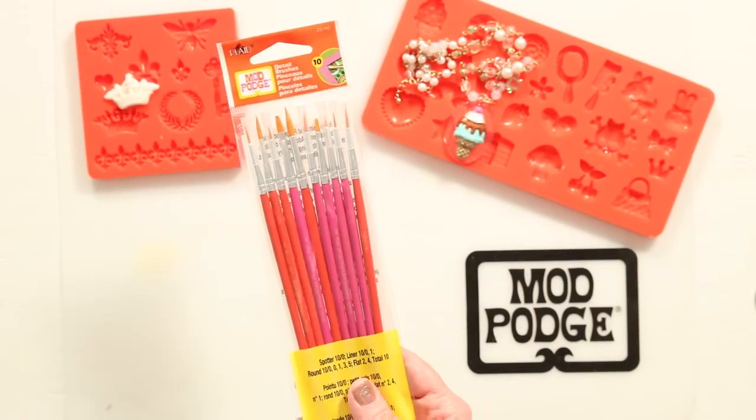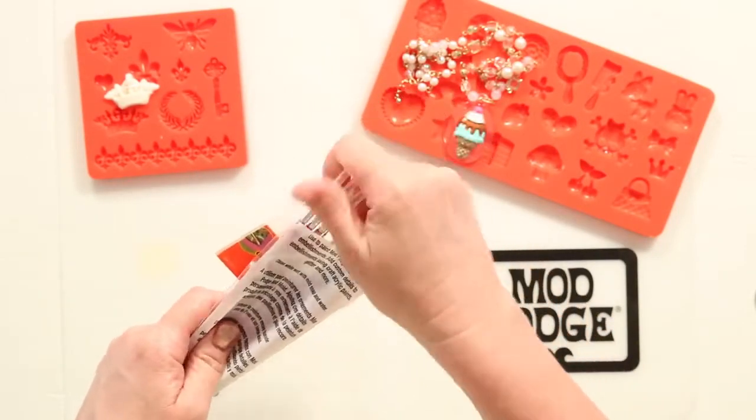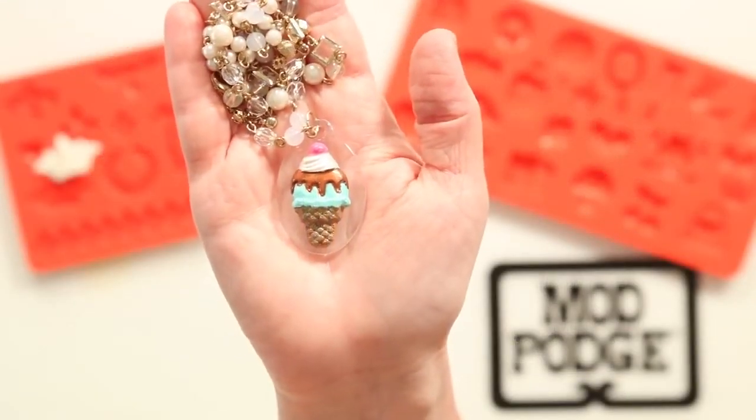The set of 10 detail paint brushes comes with a spotter, liners, round and flat paint brushes. They are perfect for painting Mod Melts and for jewelry design.